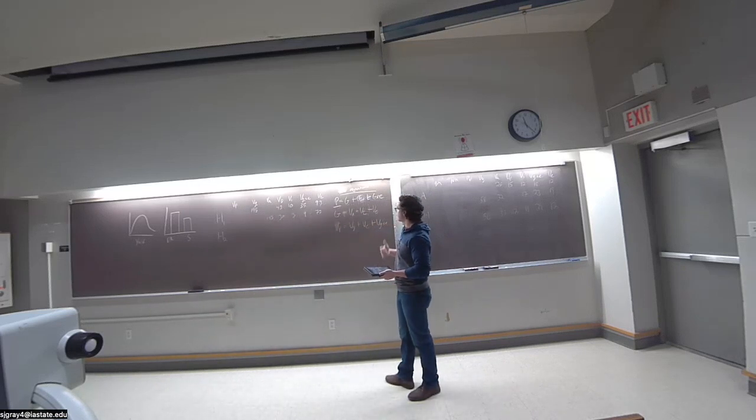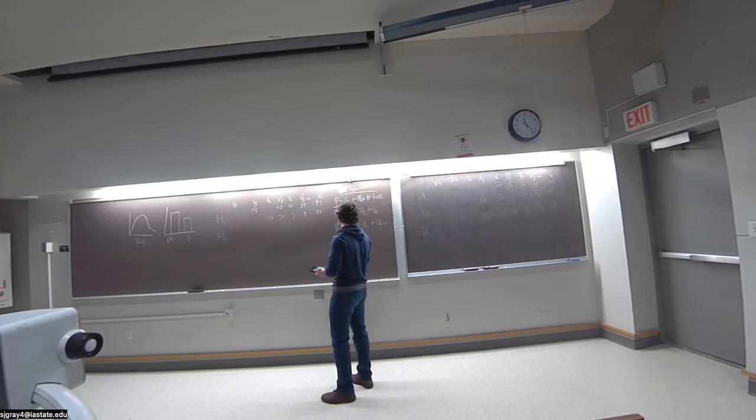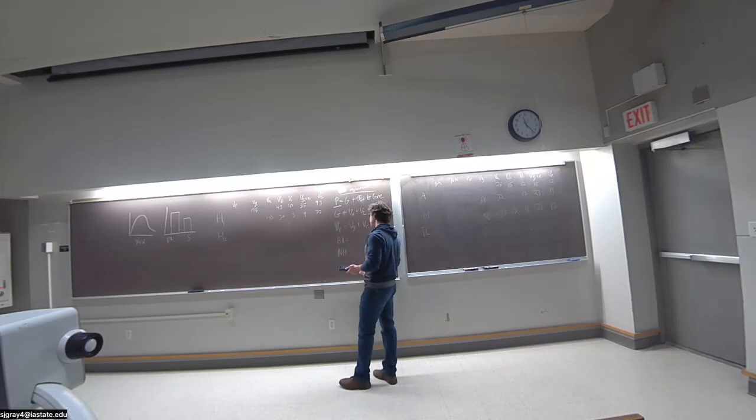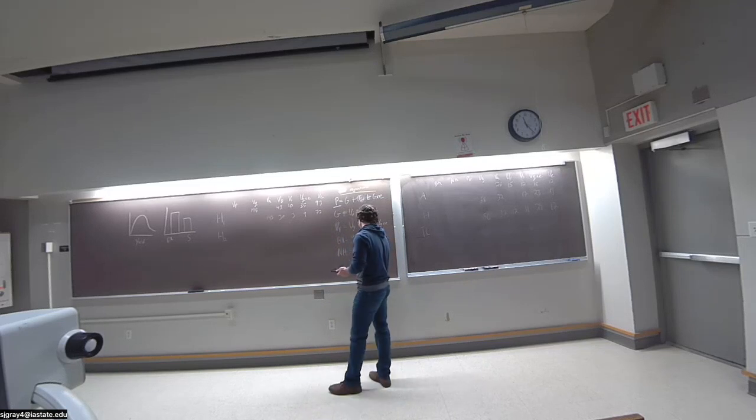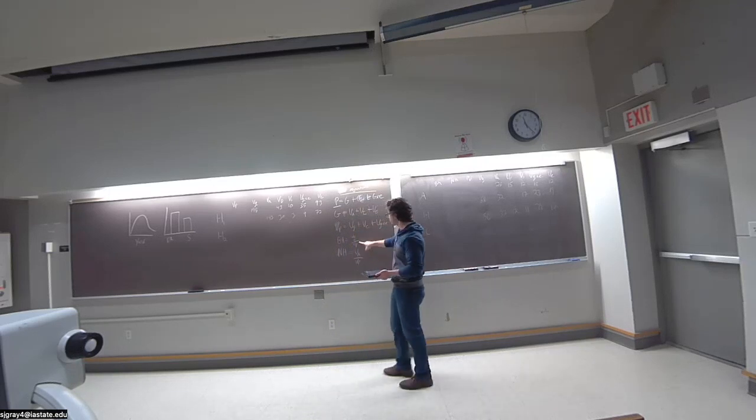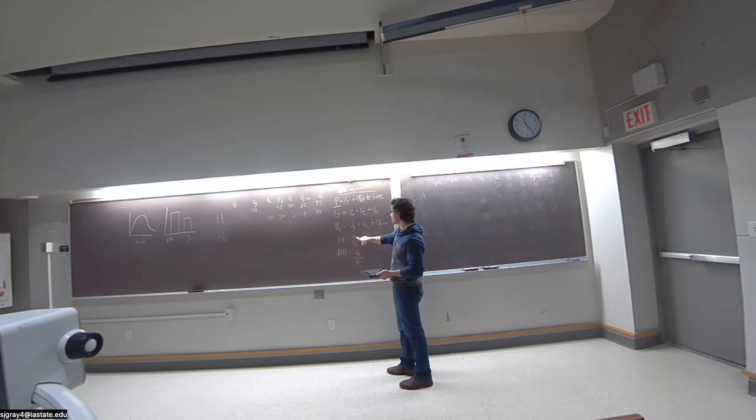And then you want to look at heritability. So you have two types of heritability, you have broad sense, and you have narrow sense. And pretty much the only difference between these two is in the numerator. So with broad sense heritability, you're looking at your genotypic variance over your phenotypic variance. With narrow sense heritability, you're looking at your additive variance over your phenotypic variance. The denominator will stay the same, the phenotypic variance. Your numerator is going to differ.